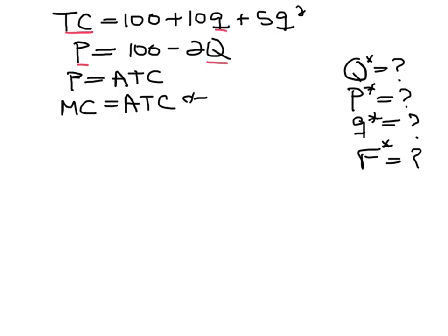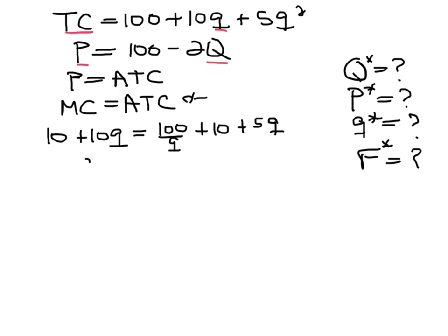Let's start with marginal cost equals ATC. Marginal cost is going to be equal to 10 plus 10Q, and ATC is going to be equal to 10Q plus 10 plus 5Q. Now we have all these things in terms of Q, so we can solve for Q and find out that Q equals 4.5.